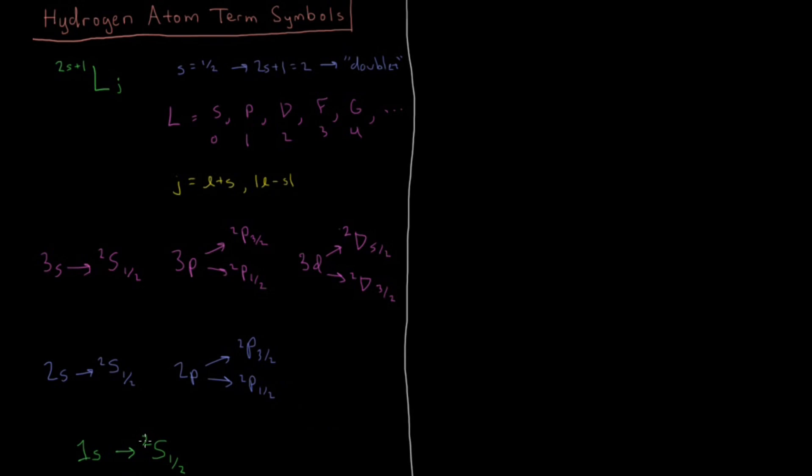Then within the doublet S 1 half, there would be two states: M sub J equals plus 1 half and M sub J equals minus 1 half. Similarly for 2s and 3s, there would be M sub J equals plus and minus 1 half, so two states within each of those term symbols. And for the P, for doublet P 1 half, we have plus and minus 1 half M sub J. For doublet P 3 halves, we have M sub J can equal 3 halves, 1 half, minus 1 half, and minus 3 halves. Same thing up at the 3P level.